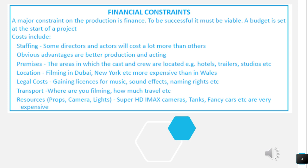Another major factor influencing the planning of a production is financial constraints — how much finance do you have and how viable is your project going to be? If you're making a video at sixth form college with basically zero budget, you can't put in CGI characters, you can't have Transformers running around in the background, you can't have explosions. You need to think about how much money you've got and how you can put that money to best use, and what things are going to be viable to include.